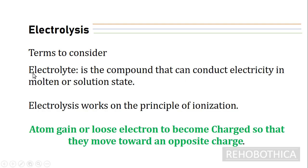Another very important part is the electrolyte. An electrolyte is a compound that conducts electricity in its molten or solution state and is able to dissociate when electricity is passed through it. We have different electrolyte substances — for example, sodium chloride (NaCl), sulfuric acid (H2SO4), and some other substances. Electrolysis works on the principle of ionization, in which atoms gain or lose electrons to become charged so that they can move towards an opposite charge.